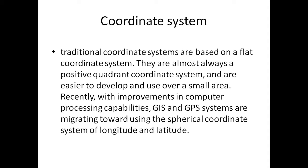Generally, we represent something in a spatial domain or in a quadrant system so that we can identify an object. There are different types of coordinate systems such as Cartesian, spherical, cylindrical, and many others. We need to understand the coordinate system because if we don't, we wouldn't be able to project and make maps to a desired level.